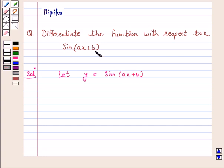Now we'll differentiate this function using the chain rule. Therefore, dy/dx = cos(ax+b) times d/dx of (ax+b).